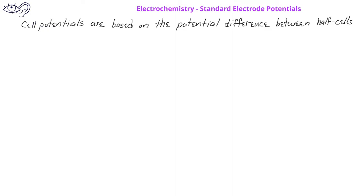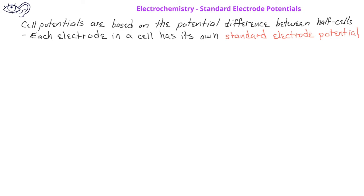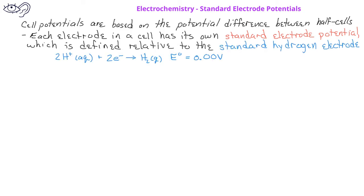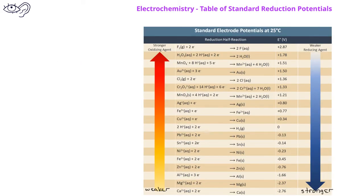In previous videos, we saw that the cell potential for an electrochemical cell is based on the potential difference between the two half-cells. Each electrode in a cell has its own standard electrode potential, which is defined relative to a standard hydrogen electrode with a standard electrode potential of 0.00 volts. In this figure, we have a ranking of the reduction potentials of various half-reactions.